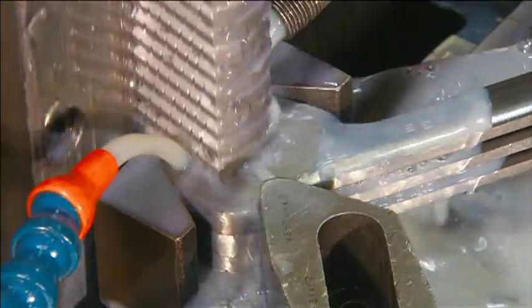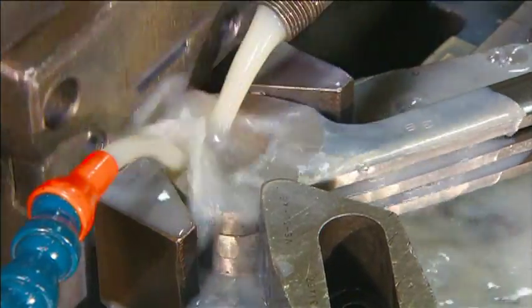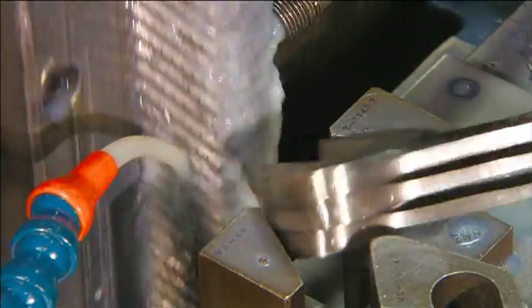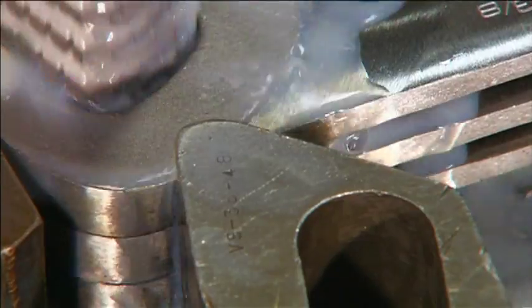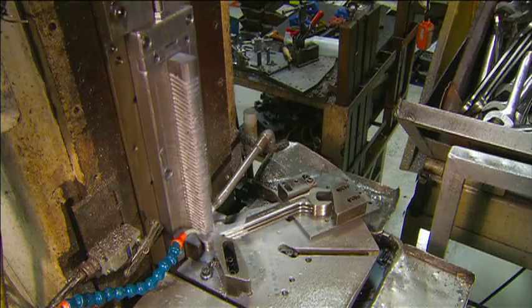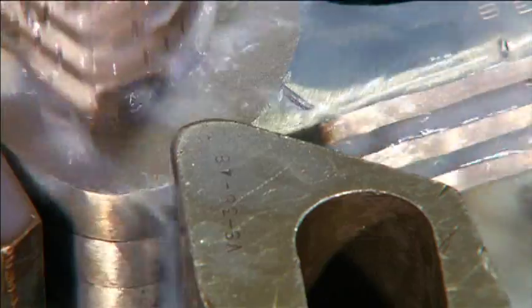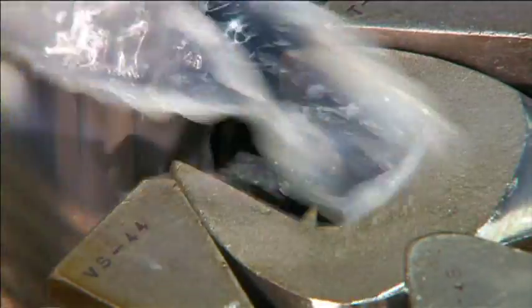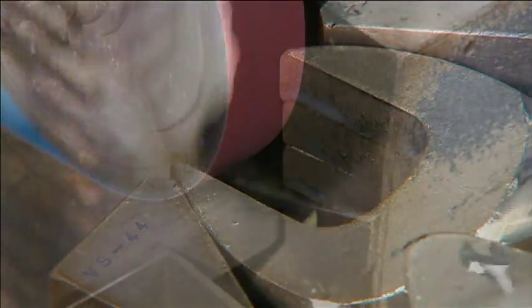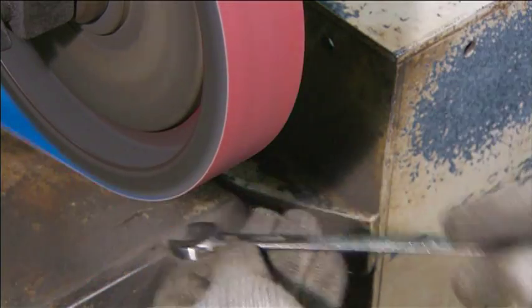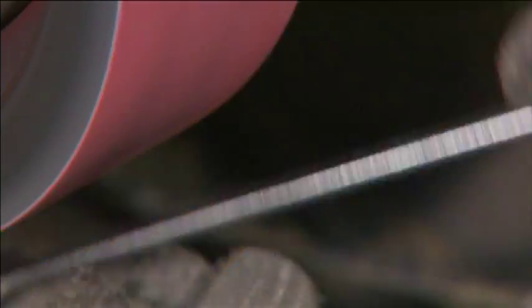Open end wrenches also go through a broaching operation. In this case, the broach tool shapes the open end into the desired size. A worker then grinds the open end of the wrenches and makes sure they are perfectly smooth.